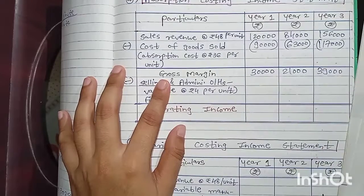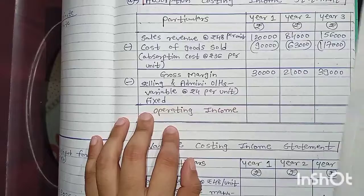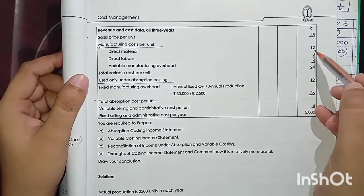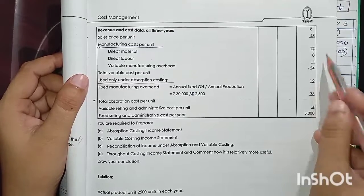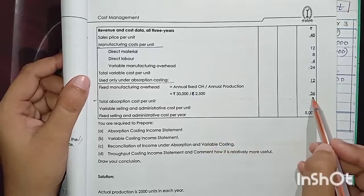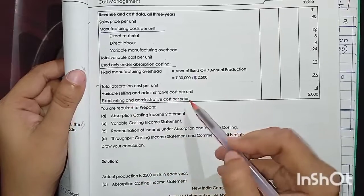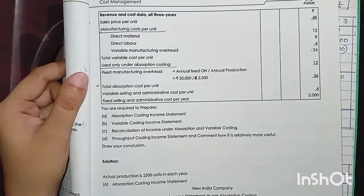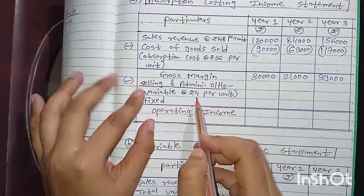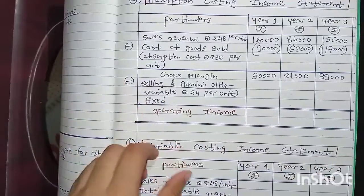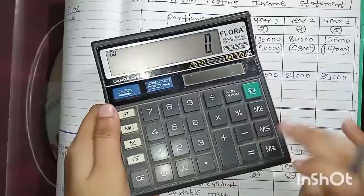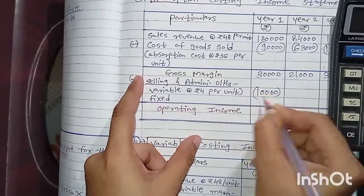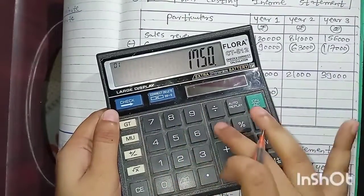After that we consider the remaining expenses. We have used the total absorption cost of ₹36 per unit — that is 12 + 8 + 4 = 24 for variable plus 12 fixed = 36. Now remaining are: variable selling and administration cost per unit (₹4), and fixed selling and administration cost. We record variable selling cost: 2,500 × ₹4 = ₹10,000 for Year 1.